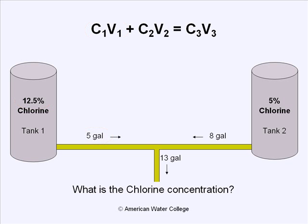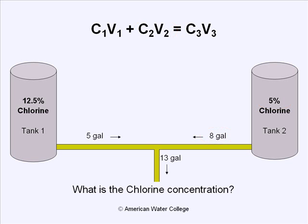The concentration and volume of the second solution will be the 5% chlorine solution, of which there are eight gallons. The final concentration and volume — C3 and V3 — is the 13 gallons and the unknown C3. So we'll be solving for C3.